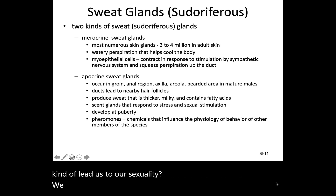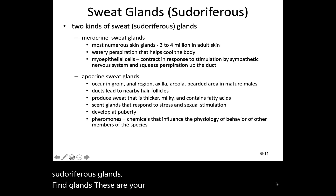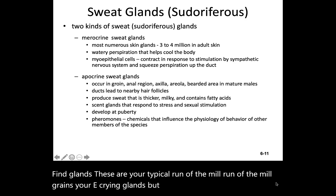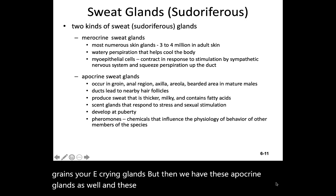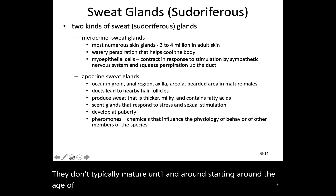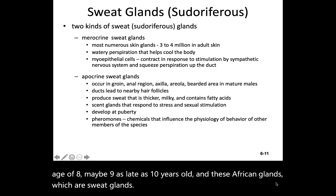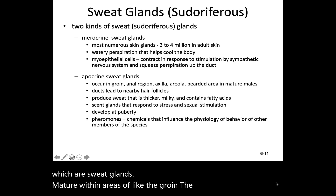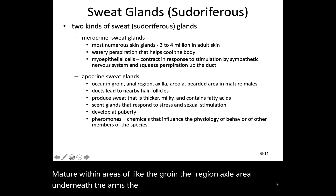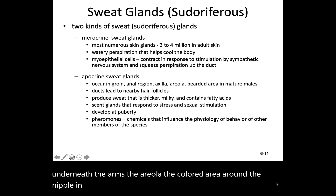We know from lab that there are two types of sweat glands, or sudoriferous glands. We have our merocrine glands — these are your typical run-of-the-mill glands, like your eccrine glands. But then we have these apocrine glands as well. These apocrine glands don't typically develop or mature until around age eight, nine, or as late as ten years old. They mature within areas like the groin, the anal region, axillary underneath the arms, the areola — the colored area around the nipple — and in mature males, within the bearded area, where there's a higher concentration of these apocrine glands.